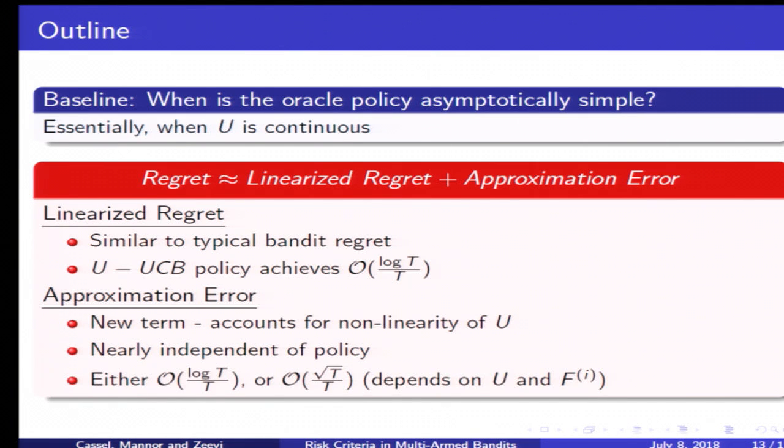What we essentially show is that for most cases the approximation error is indeed of order log T over T, and in some more unfortunate cases it is still only root T over T. In these cases we can only show regret of root T over T. This all depends quite explicitly on the attributes of the function U together with the arm distributions FI.